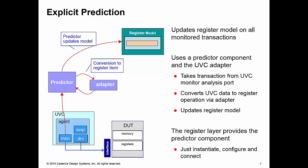The register layer itself provides the predictor component. You don't have to write it yourself. All you need to do is to instantiate it, configure it correctly and connect it up to your register model and also to the analysis port of your monitor of your UVC.